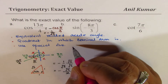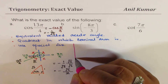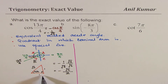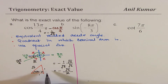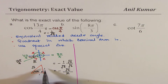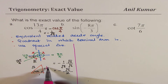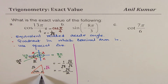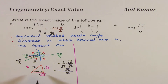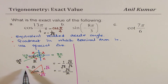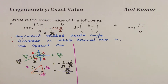Alternatively, if you scale the triangle by √2, the sides become √2, √2, and 2, so you can write cos(π/4) directly as √2/2. Either approach gives the same result.